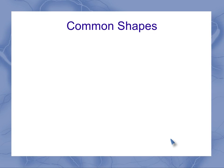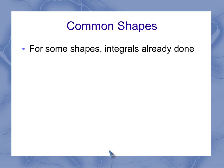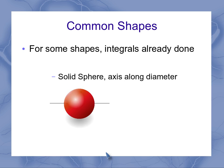Now if we've got some common shapes, we don't have to go through that messy calculus-based integral, because they've already done that messy integral for some of the common shapes. For example, if I've got a solid sphere, it's got an axis along its diameter.